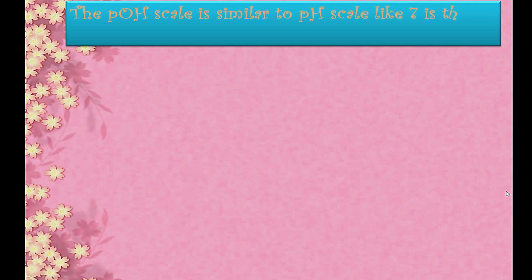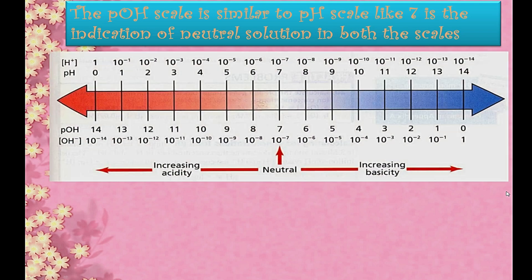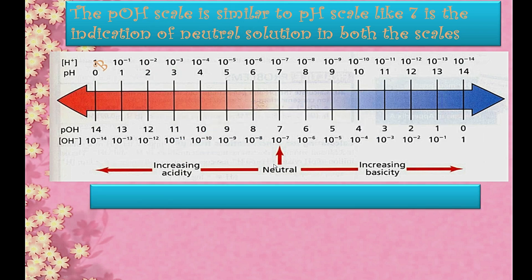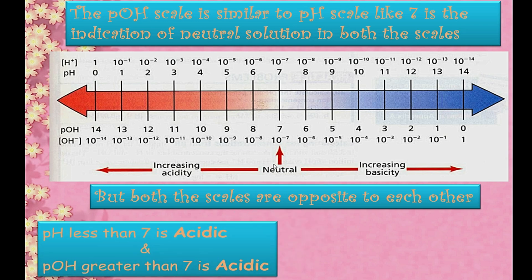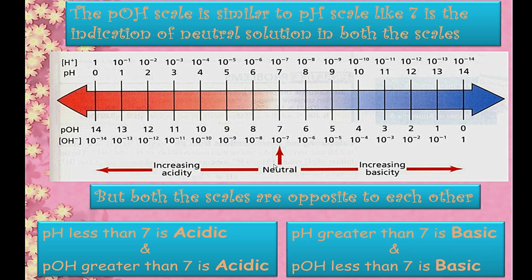The pOH scale is similar to the pH scale in that 7 indicates a neutral solution in both. However, the two scales are opposite to each other: pH less than 7 is acidic, but pOH greater than 7 is acidic. Similarly, pH greater than 7 is basic, but pOH less than 7 is basic. You can learn either scale and simply remember that they are opposite to each other.